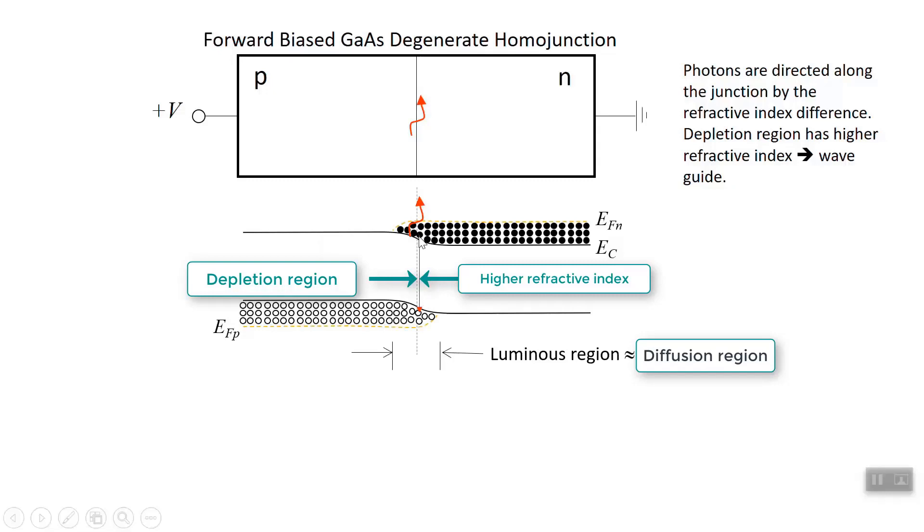So every time an electron and a hole combine, they emit a photon, and it is directed along the junction. The luminous region is really the depletion region. Whichever side is more lightly doped has a larger depletion region. And usually we try to make sure that the P side is more lightly doped, so that it has the longer depletion length, x_of_p, because electrons have larger diffusion length. That's the band diagram.